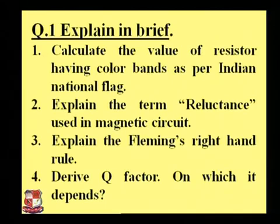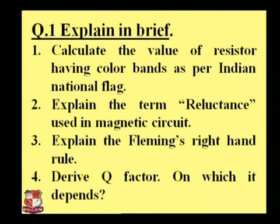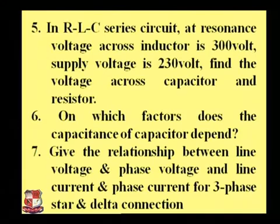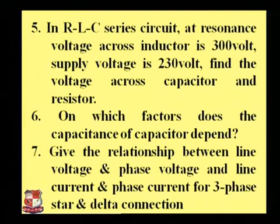Calculate the value of resistance — this is a two-marks question. Question one: calculate the value of the resistor using the Indian national color code. Question two: explain the term reluctance for a magnetic circuit. Question three: Fleming's right-hand rule. Question four: what is the Q factor and on which parameters does it depend? Question five: in a series RLC circuit at resonance, the voltage across the inductor is 300V and the supply voltage is 230V — find the voltage across the capacitor and resistor. Question six: on which factors does the capacitance of a capacitor depend? Question seven: find the relationship between line current, line voltage, phase current, and phase voltage for star and delta three-phase circuit connections.